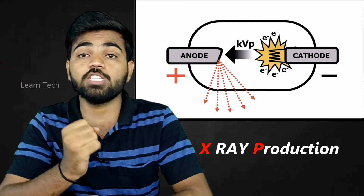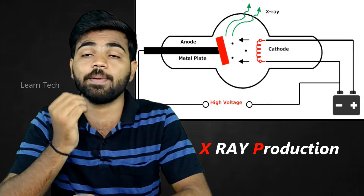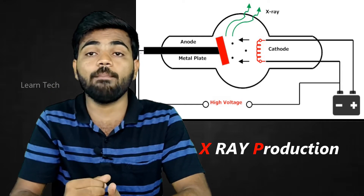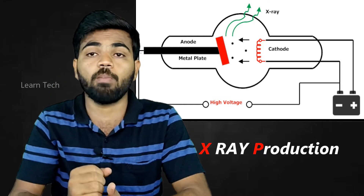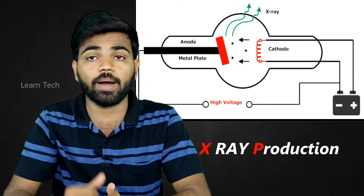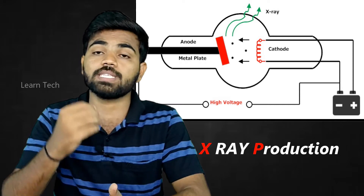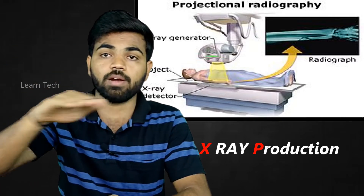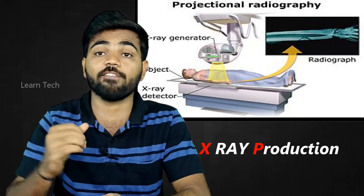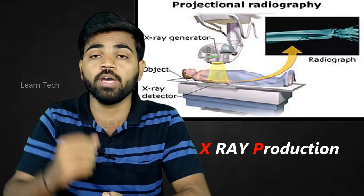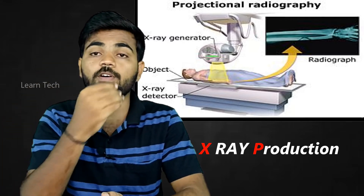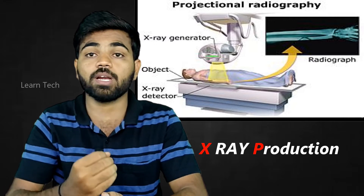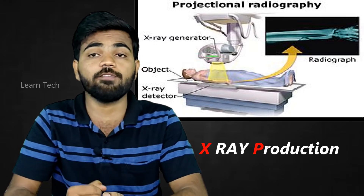X-rays pass through the human body. The x-ray machine directs x-rays through the human body, including the blood, and produces an x-ray image.